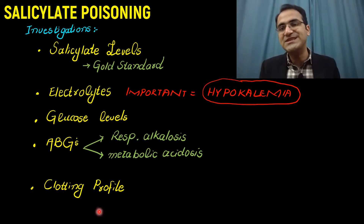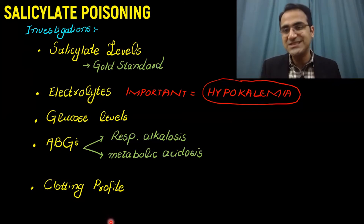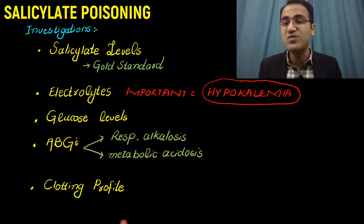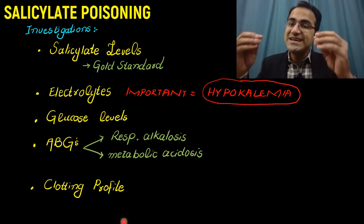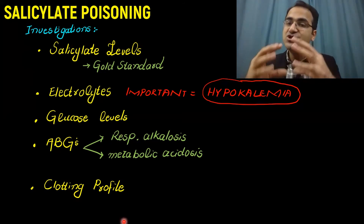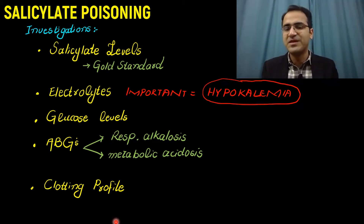Clotting profile must also be done because there is increased risk of bleeding in salicylate poisoning. This is because salicylates inhibit platelet aggregation, and inhibition of platelet aggregation leads to increased bleeding time.